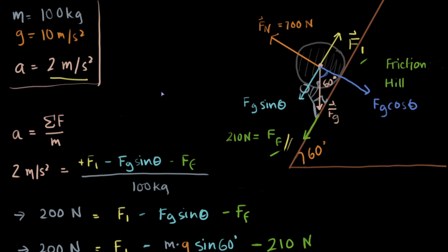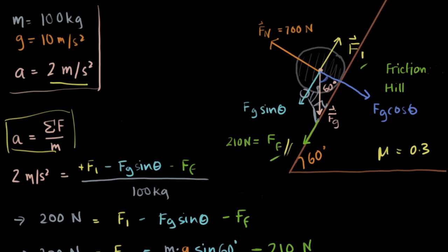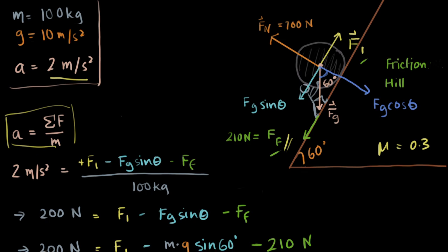Recapping the video: we found the normal force first because we needed friction, which depends on the coefficient of friction and normal reaction — found using FG cos theta. We found friction using those two parameters, then used the FBD to find all opposing forces, and finally used the second law of motion to calculate the Sisyphean force of 1276 N. Sisyphus is strong — and so are you. See you in the next video. Take care of yourself. Stay frosty!